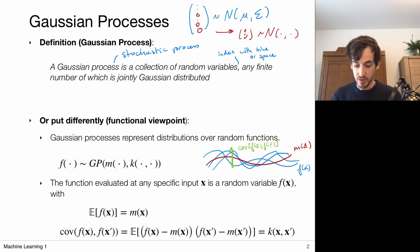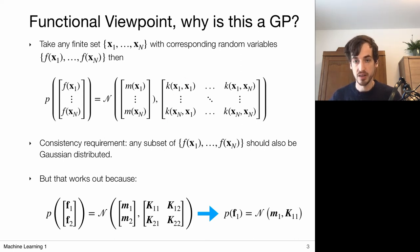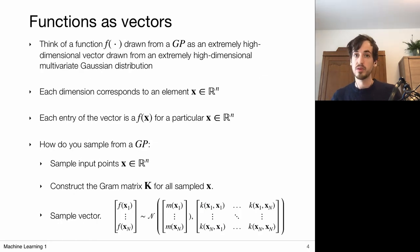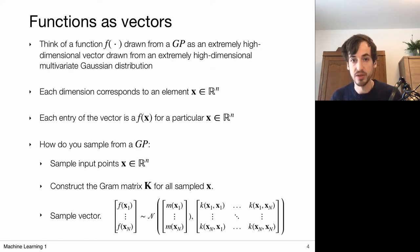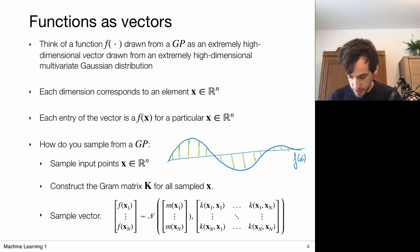Gaussian processes can be thought of as distributions that return full functions. Sampling from a Gaussian process gives one function, and evaluating it at observation points gives a random vector drawn from a multivariate Gaussian characterized by the kernel function. To make the connection between random variables as vectors and random functions more concrete, think of a function f drawn from a GP as an extremely high-dimensional vector from an extremely high-dimensional multivariate Gaussian.